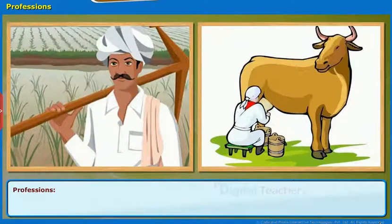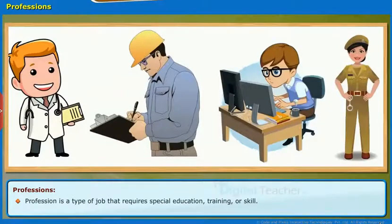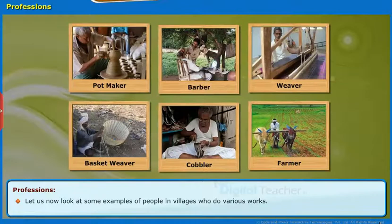Professions: Let us know about the different professions of people. Just like our families, there are people in the village doing different kinds of work. Profession is a type of job that requires special education, training or skill. The work that involves skill to get income is called profession. Let us now look at some examples of people in villages who do various works.